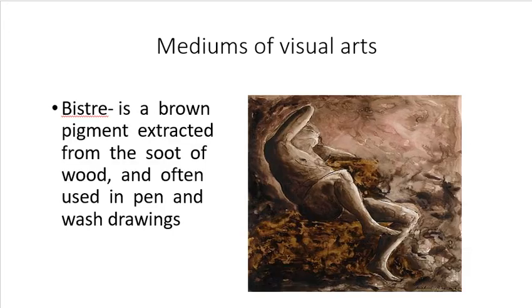One of the less common mediums used in art is bistre — a brown pigment extracted from the soot of wood, often used in pen and wash drawing. The bistre is similar to the color of wood and comes from the roots. It is mostly used in China for dyeing.